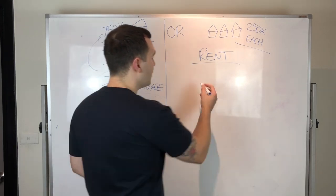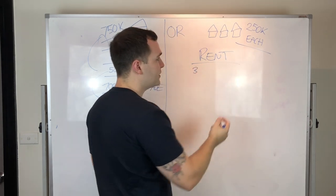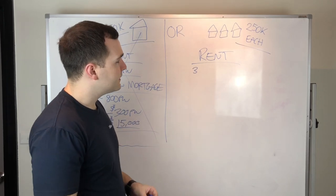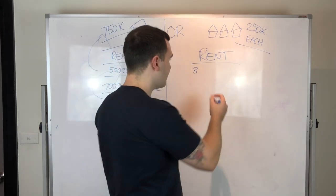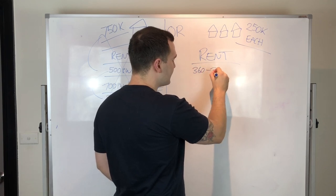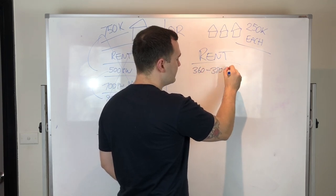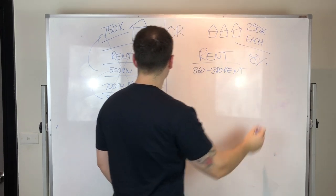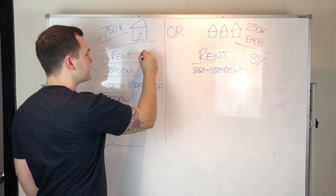So per week in rent on a $250,000 purchase, your mortgage repayment expenses might equal out to $300 to $350 per week, but you're getting $360 to $380 rent. So that's about an 8% yield, where this scenario was probably around a 4% yield.